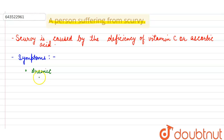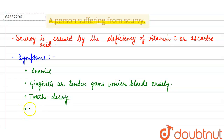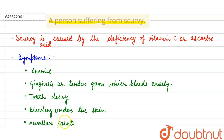The person will show gingivitis, or tender gums which bleed easily, tooth decay, bleeding under the skin, swollen joints, and sometimes gastrointestinal bleeding as well.